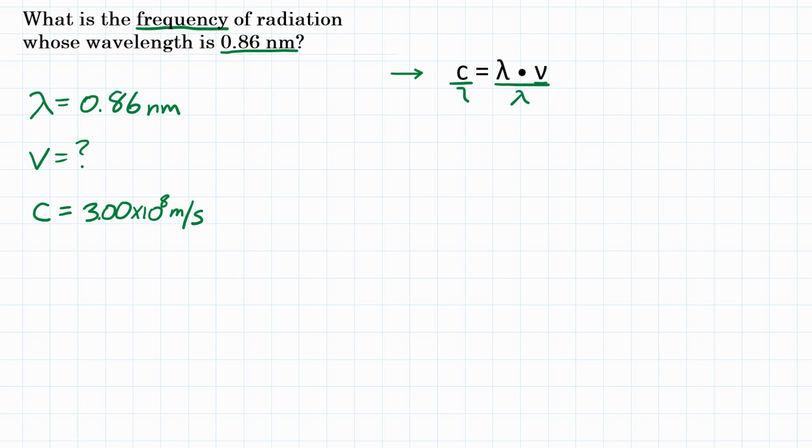wavelength will cancel out on the right side and we can rewrite our equation. I'm going to flip it so that frequency is on the left and we're left with frequency equals the speed of light divided by wavelength.